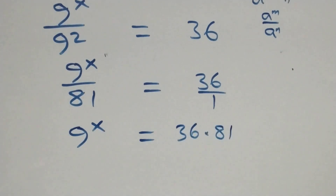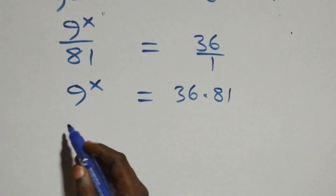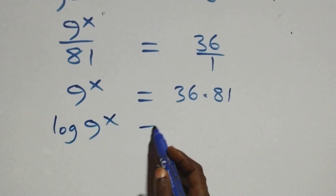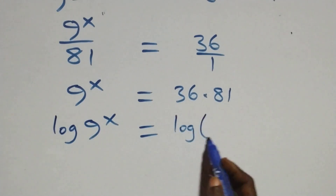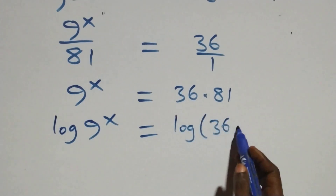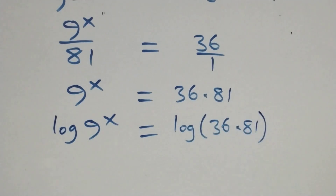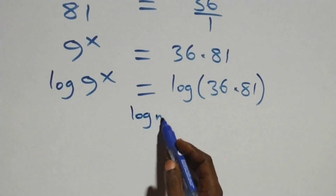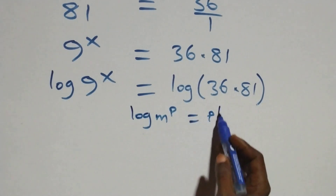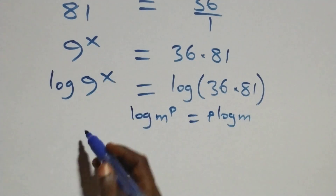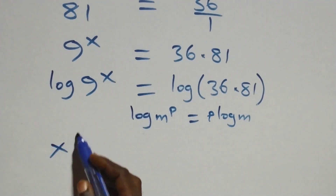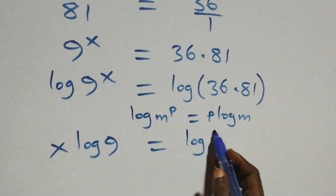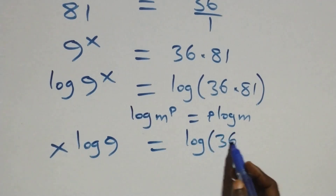From here we take the log on both sides: log of 9 raised to power x equals log of 36 times 81. We then apply the power rule of logarithms, where log of m raised to power p equals p times log m. This gives x log 9 equals log of 36 times 81.